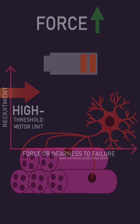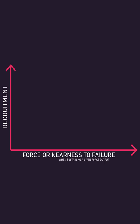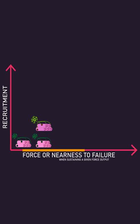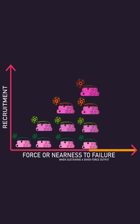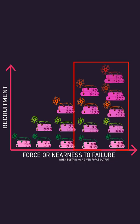Motor units are recruited sequentially. With low muscle forces, only low-threshold units are recruited, but as the muscle produces progressively higher forces or fatigues while sustaining low forces, higher threshold units get additionally recruited.